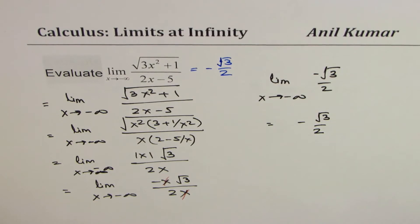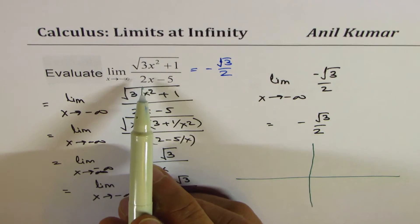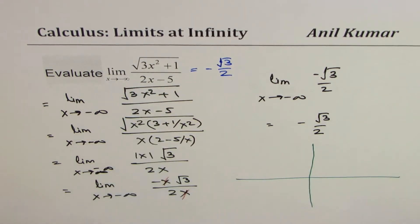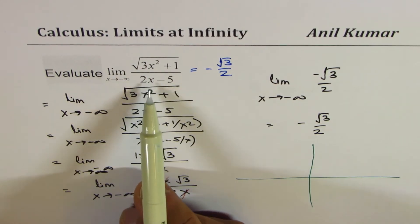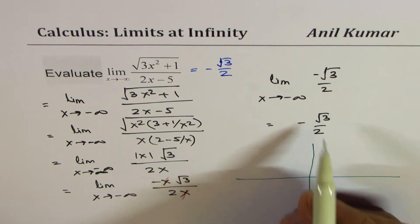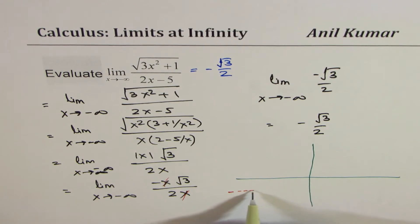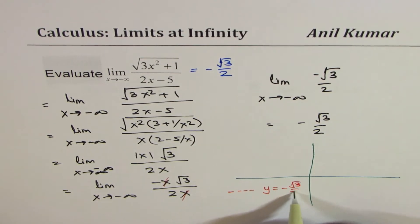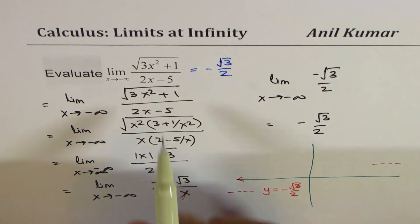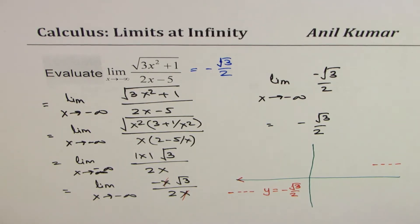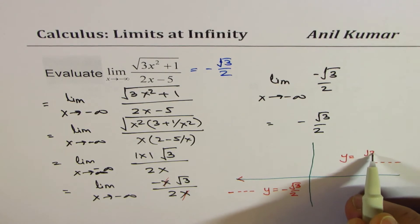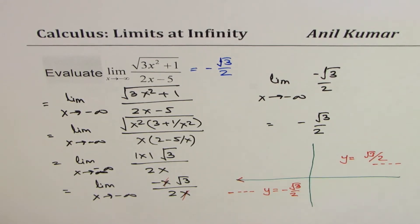So you realize that for this function, approaching positive infinity gives a positive value and approaching negative infinity gives a negative value. The horizontal asymptote is y equals minus square root of 3 over 2 when approaching negative x. The function therefore has two horizontal asymptotes: y equals positive square root of 3 over 2 and y equals negative square root of 3 over 2, depending on whether you approach the right or left side.